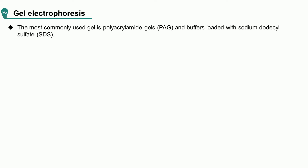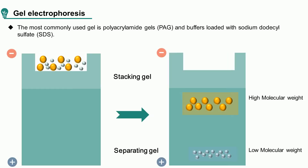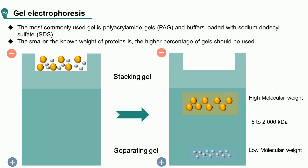Speaking of gel electrophoresis, the most commonly used gel is polyacrylamide gel with buffers loaded with sodium dodecyl sulfate. Western blot uses two types of gel: stacking gel, which is used to concentrate all proteins in one band, and separating gel, which allows for separating proteins according to their molecular weight. Smaller proteins migrate faster in SDS-PAGE when a voltage is applied. PAGE can separate proteins ranging from 5 to 2,000 kDa according to the uniform pore size, which is controlled by the different concentration of polyacrylamide. When choosing the appropriate percentage of the separating gel, we should consider the size of the target proteins — the smaller the molecular weight of the protein, the higher percentage of gel should be used.